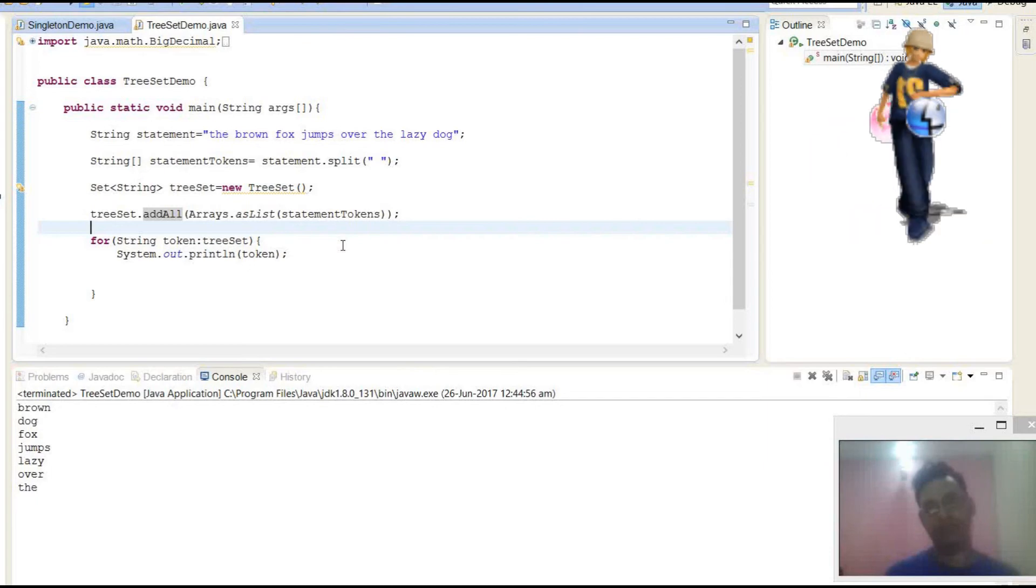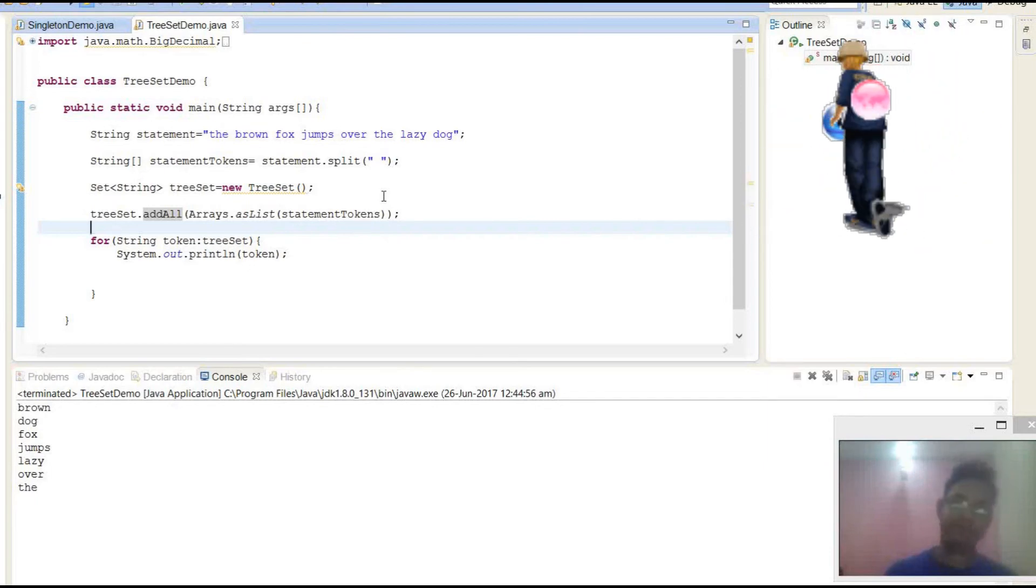So TreeSet provides uniqueness because of add method, whereas it sorts elements as well because of compare or compareTo methods.